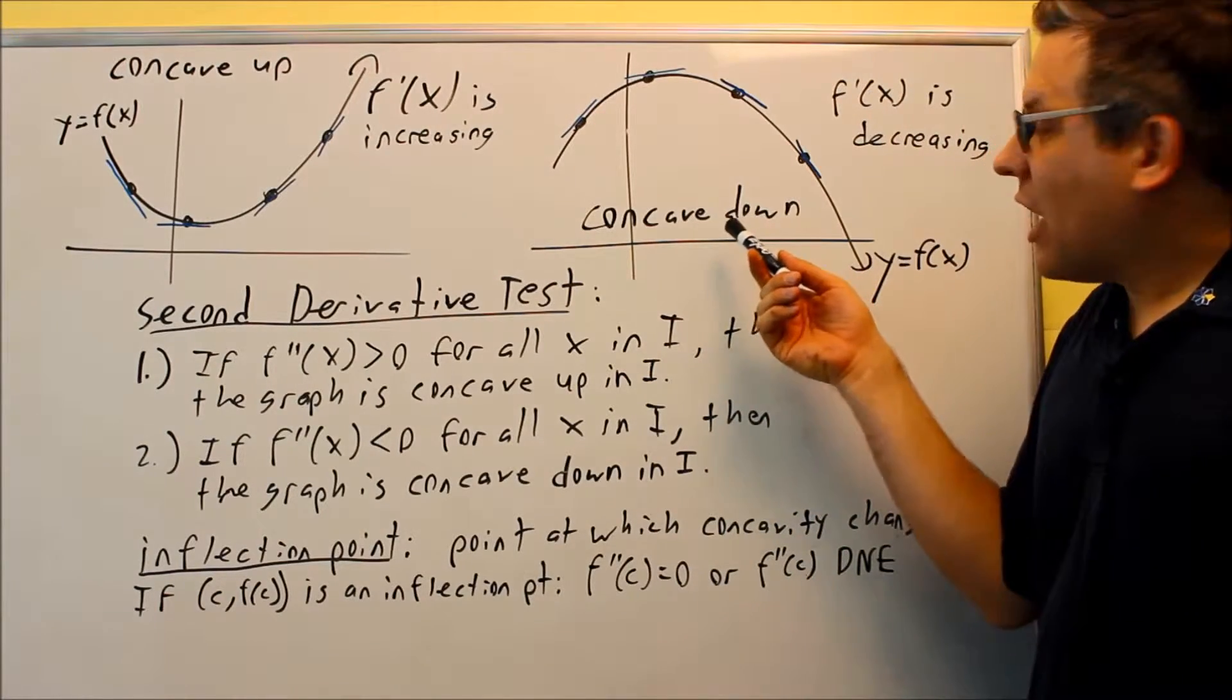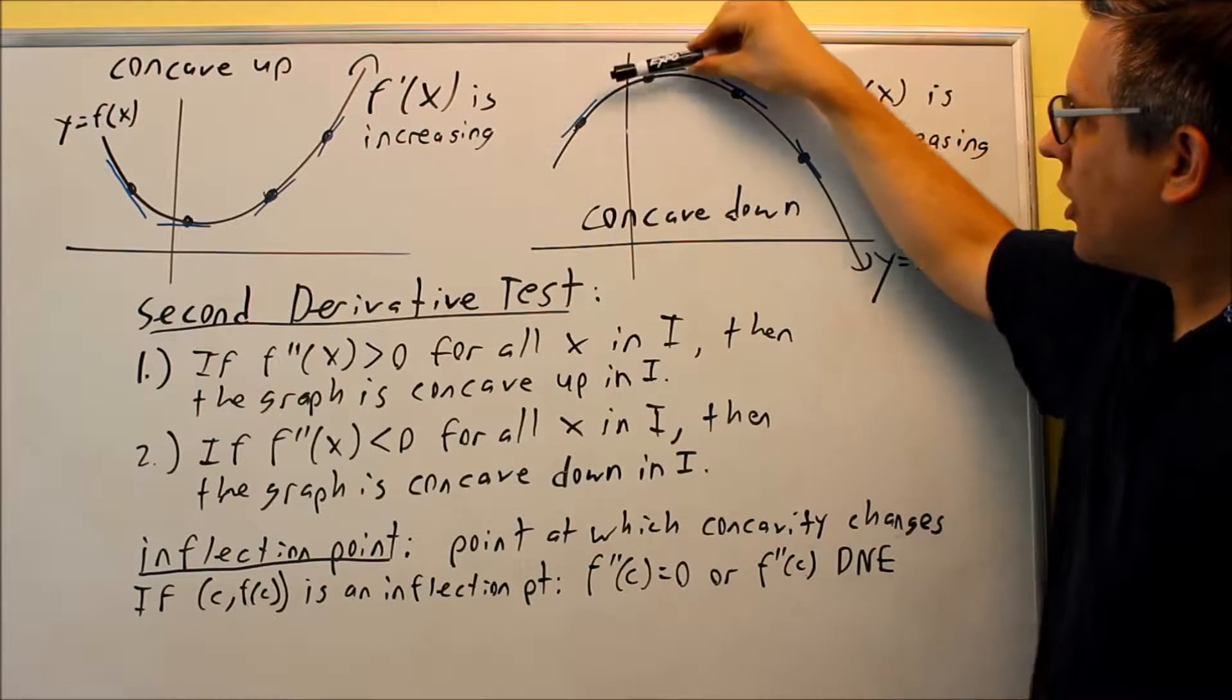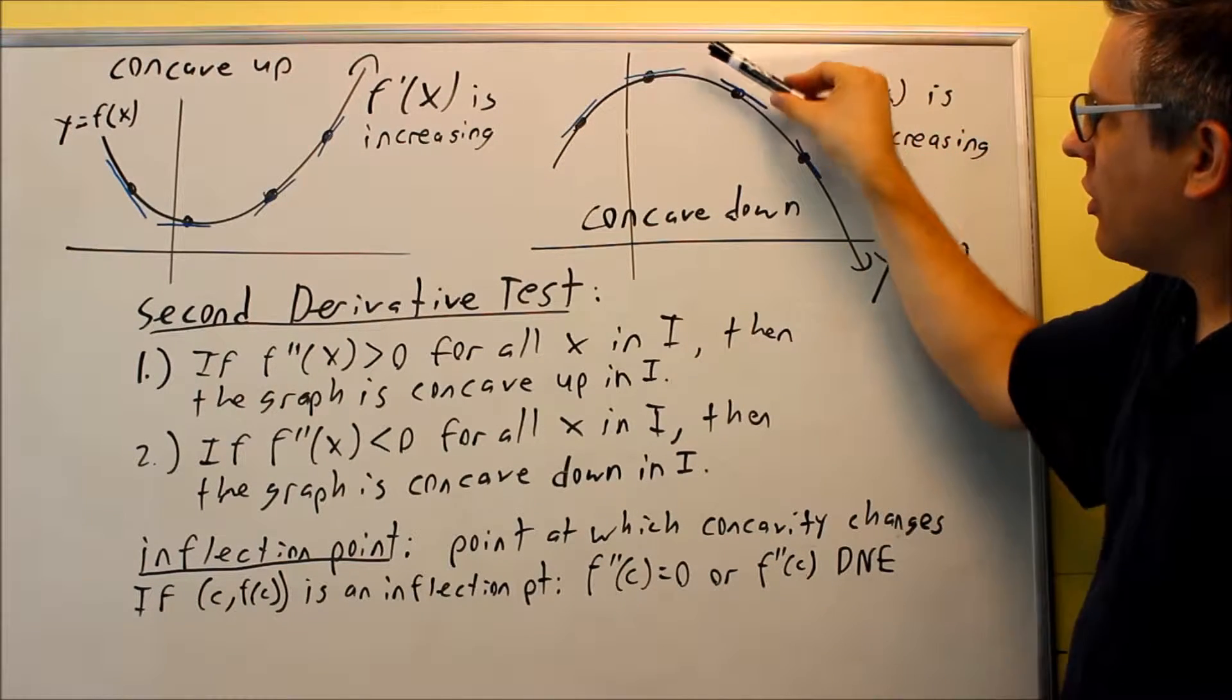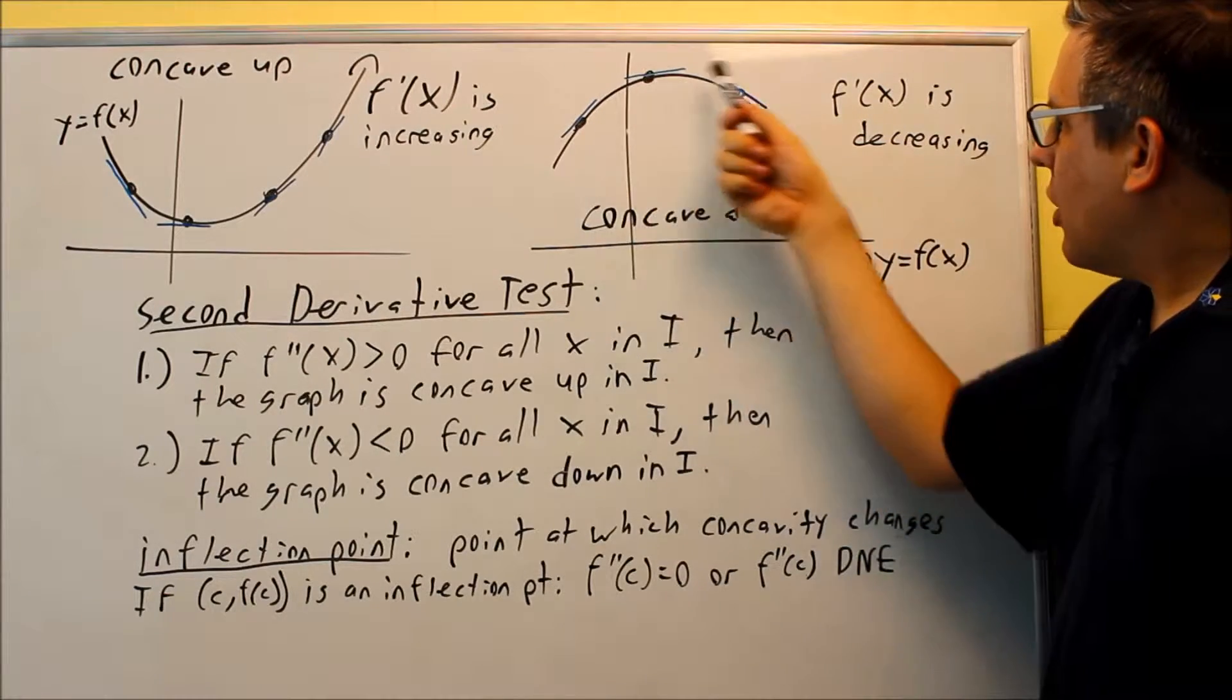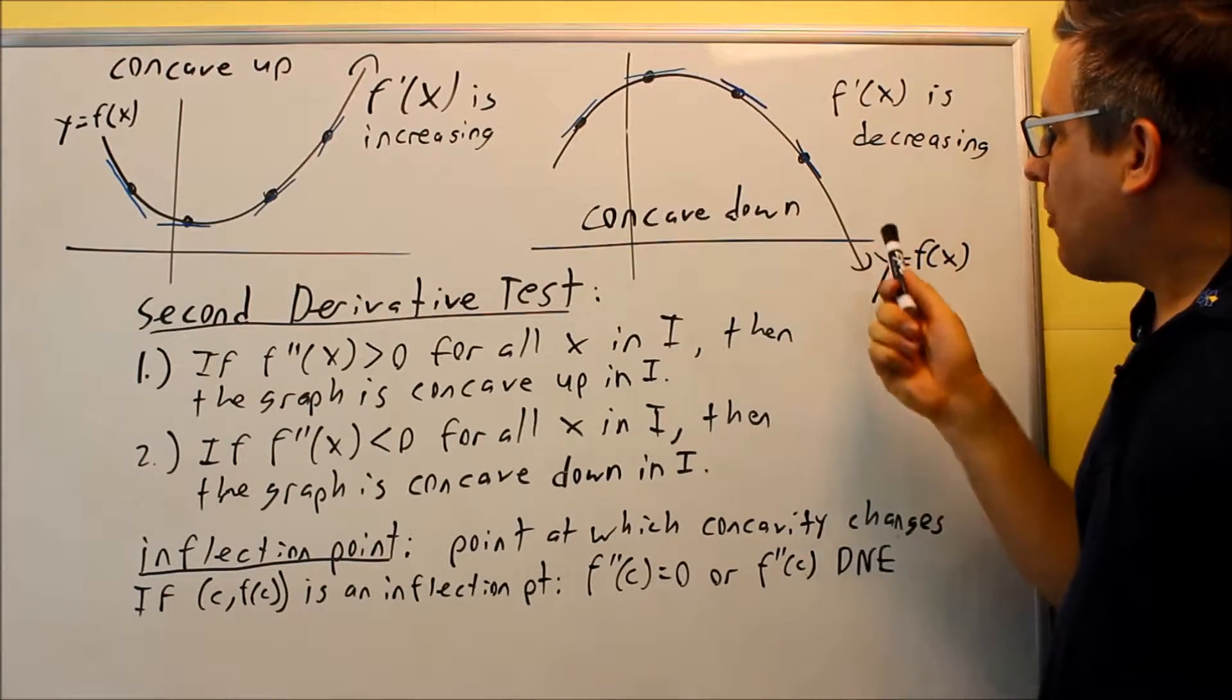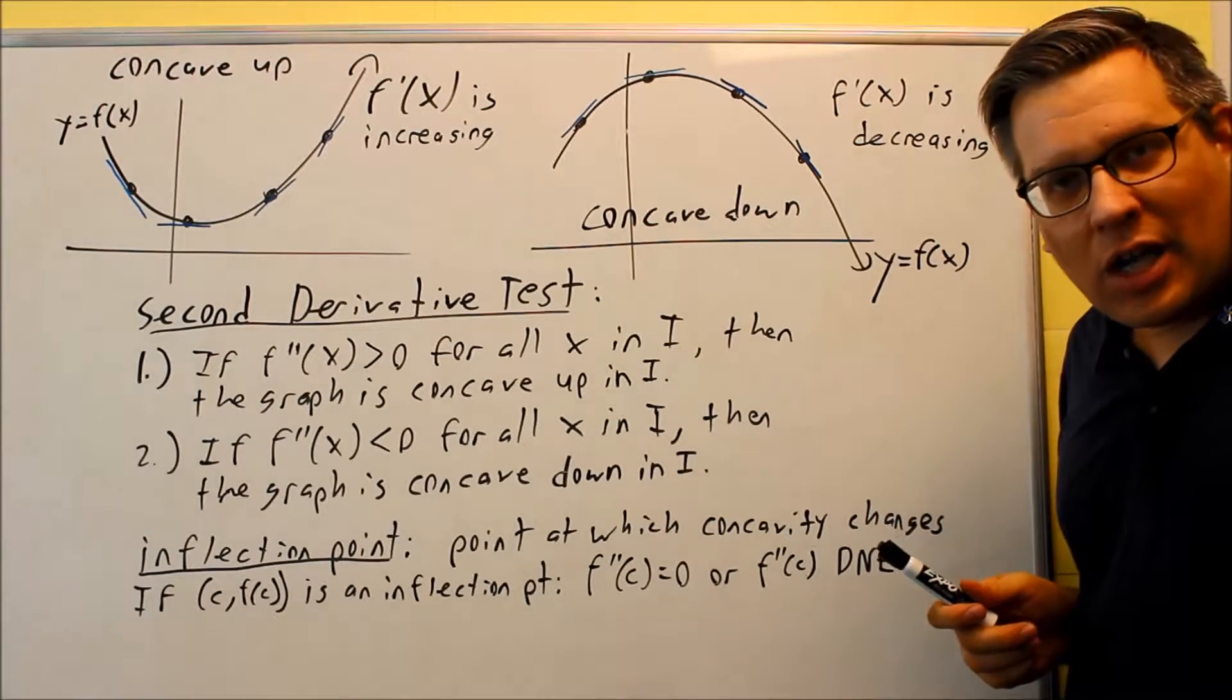Now likewise if you have concave down that means that the derivative is decreasing. Again you have a positive slope here, it's closer to zero, got smaller, now it's negative, now it's more negative. The first derivative is decreasing. So when you see that happening on the original graph it's going to be concave down.